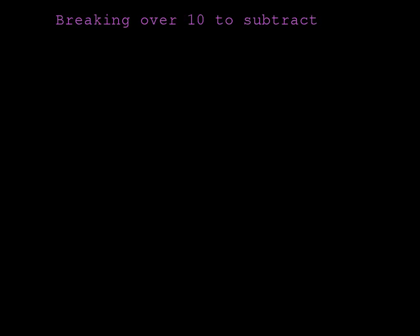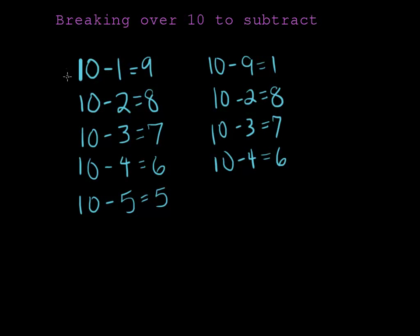To begin we're going to review some pretty easy subtraction problems that involve complementary numbers. All these numbers subtract from 10. 10 minus 1 is 9 because 1 plus 9 makes 10.